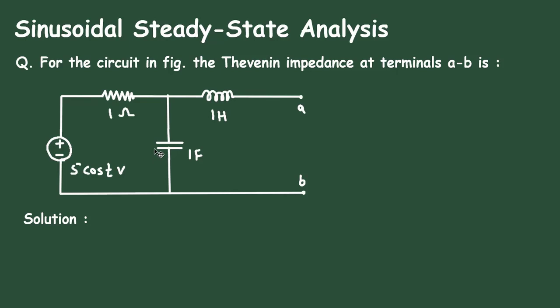In this video, we will see an example on Sinusoidal Steady-State Analysis. Question: For the circuit in figure, the Thevenin impedance at terminals A-B is?